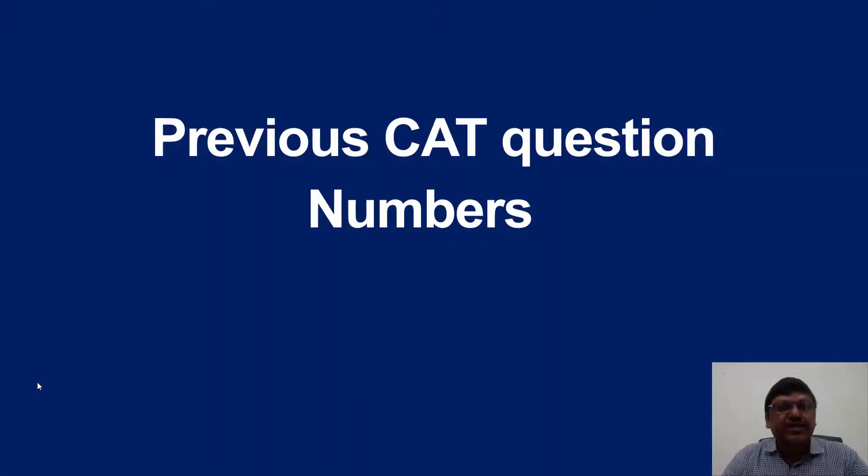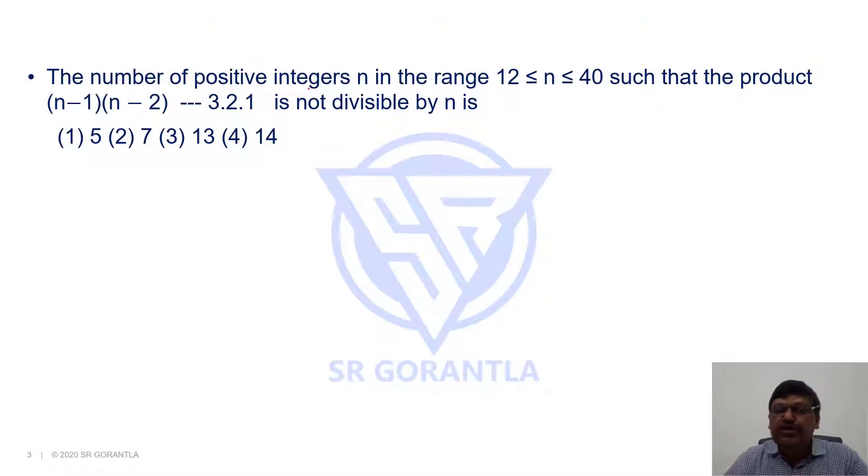Welcome to my channel. In this session, we will discuss a question on numbers from a previous CAT paper. The number of positive integers n in the range 12 ≤ n ≤ 40 such that the product (n-1)(n-2)...3·2·1 is not divisible by n is...